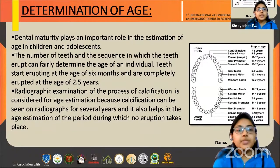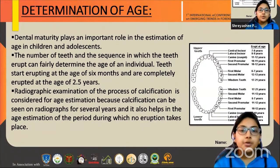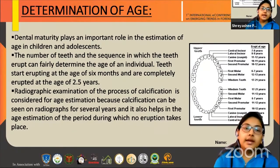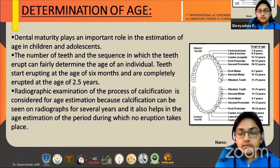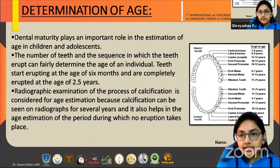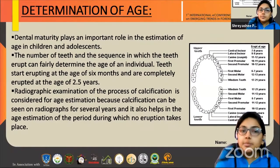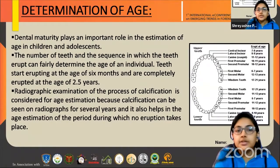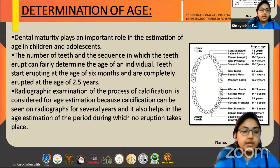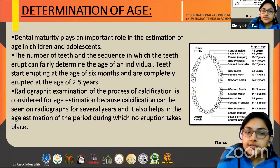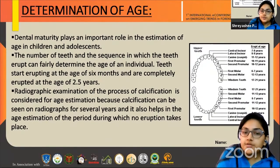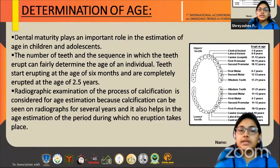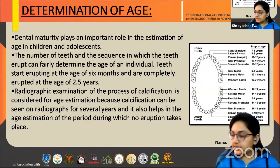Determination of age: Dental maturity plays an important role in the estimation of age in children and adolescents. The number of teeth and the sequence in which they erupt can fairly determine the age of an individual. In the figure we can see the various teeth and their age of eruption. Teeth start erupting at the age of six months and are completely erupted at the age of 2.5 years. Radiographic examination of the process of calcification is considered for age estimation because calcification can be seen on radiographs for several years, and it also helps in age estimation during periods in which no eruption takes place.